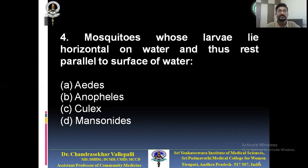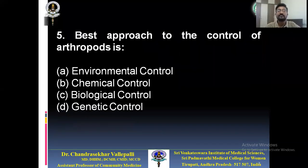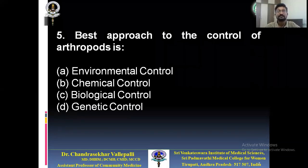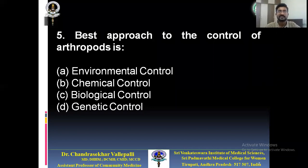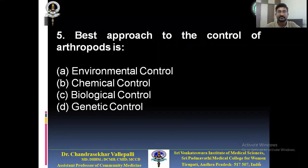Fourth question: mosquitoes whose larvae lie horizontally on water and rest parallel to the surface — which type of mosquito larvae? A) Aedes, B) Anopheles, C) Culex, D) Mansonioides. Some are opting for Anopheles. Fifth question: the best approach to the control of arthropods is — A) environmental control, B) chemical control, C) biological control, D) genetic control. Many are opting for environmental control.